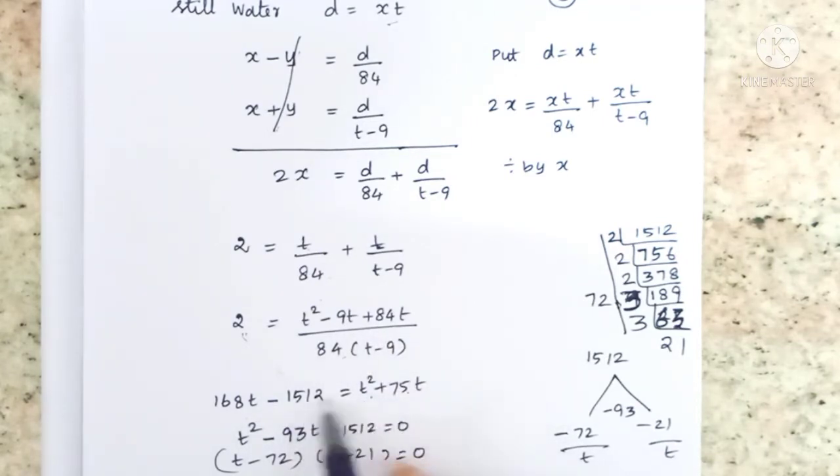Rearranging: t squared plus 75t minus 168t minus 93t plus 1512 equals 0. This simplifies to t squared minus 93t plus 1512 equals 0.